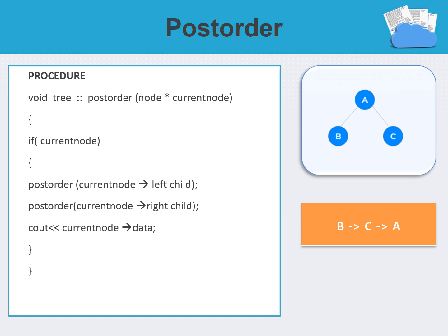Finally, we will look at the post-order tree traversal technique. It is similar to the other two traversal techniques except the order of the visit. In this procedure, we visit the left subtree first, then the right subtree, and finally the root node — the current node. In the example, the output is B, C, A: the left child data is printed first, then the right child data, and finally the current root node. So the order is B, C, A.